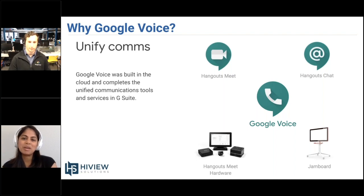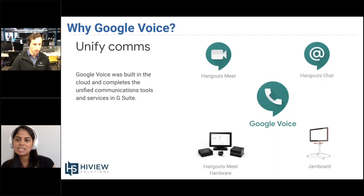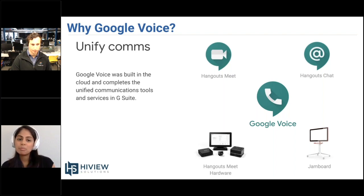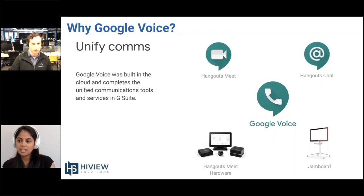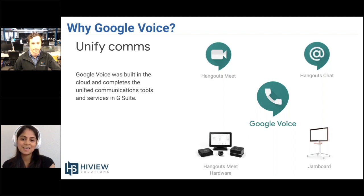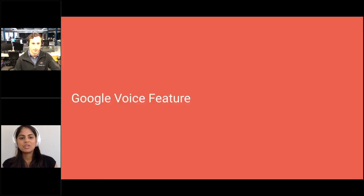Google Voice for G Suite is really unifying communications for G Suite customers — it works with Hangouts Meet, Hangouts Chat, Jamboard, and Hangouts Meet hardware — all trying to provide unified communications that's simple to use and cost-effective. Right now you can make and receive telephone calls on mobile and desk phones. Google Voice for G Suite also supports Polycom OBE editions VVX 150, 250, 350, and 450, with more hardware to be supported going forward. That takes us to the end of the Google Voice for G Suite overview, and we can now move on to Google Voice features.